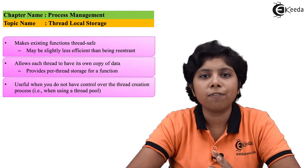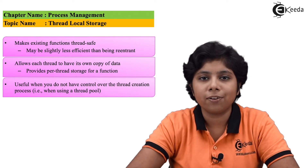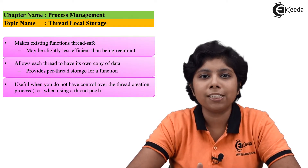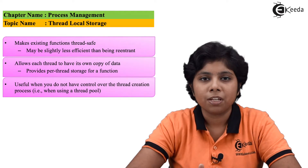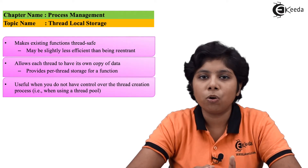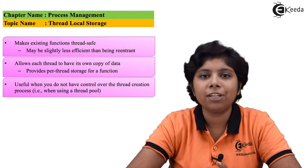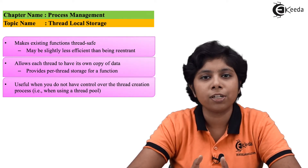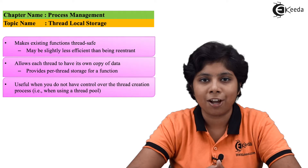One issue with thread local storage is it might be confused with local data. Local variables or local data are available only during a single function invocation within which the local data is defined.